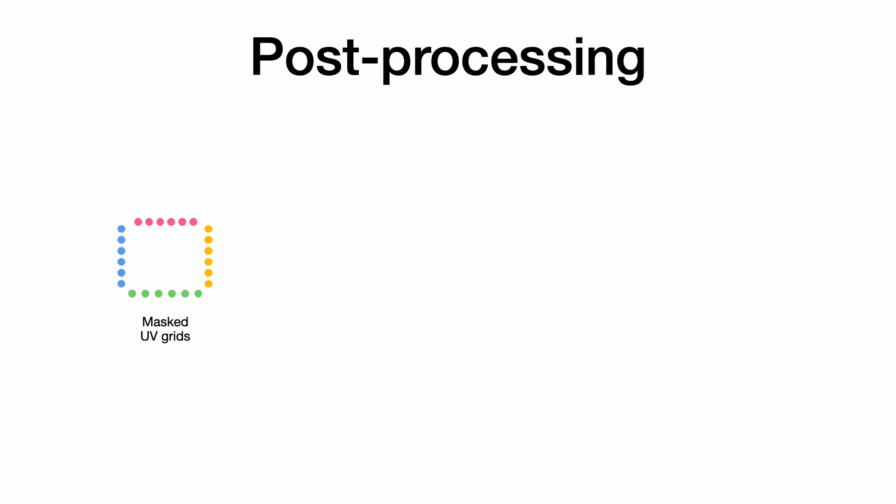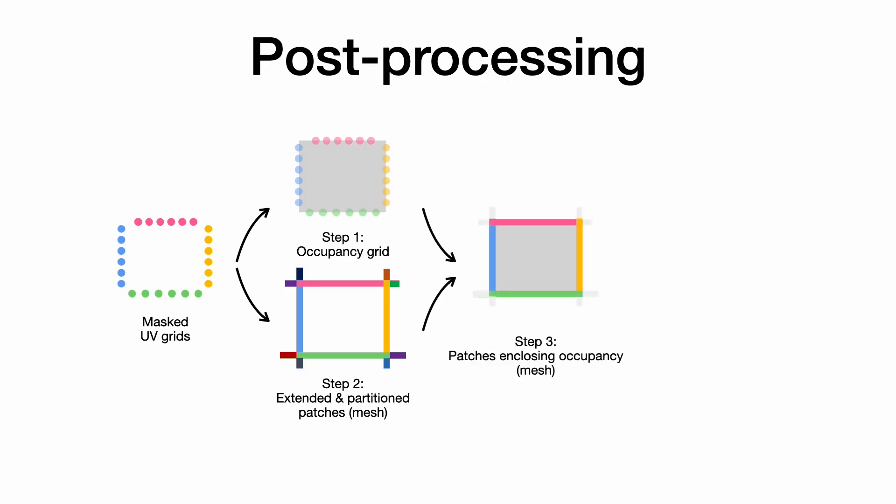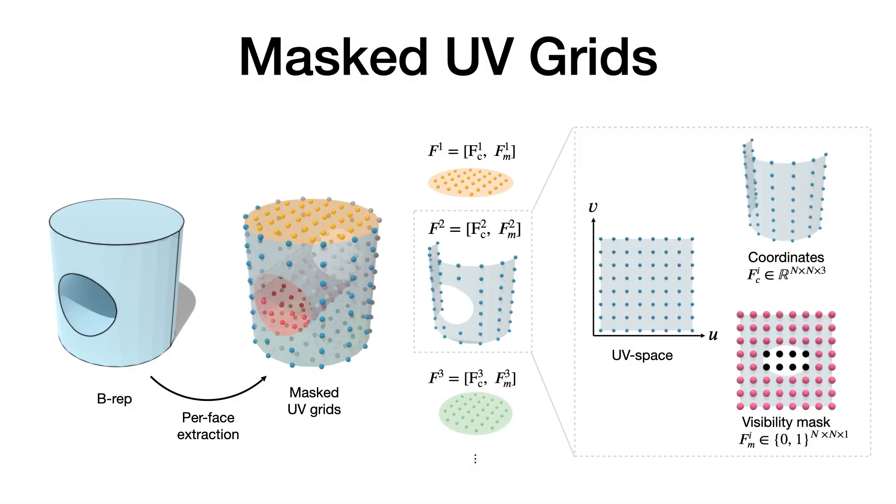Our post-processing first infers the occupancy of the solid, extends faces and partitions the space, detects patches that enclose occupancy, and finally resolves topology. The explicitness of the masked UV grid representation enables users to freely manipulate geometry without being constrained by topological validity.